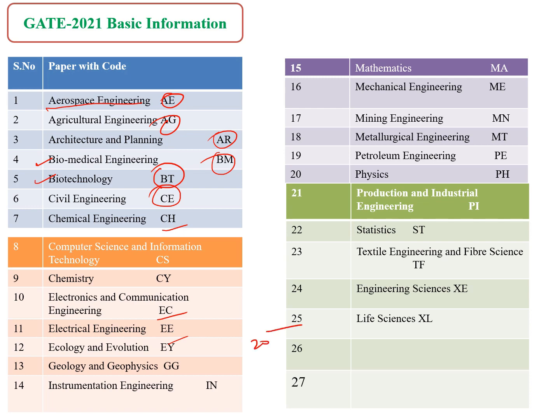In 2021, they have added two more papers, that is 26th and 27th paper. The first one is Environmental Science and Engineering. So now students can write in Environmental Science and Engineering. The next one is Humanities and Social Science. These are the two subjects which have been added in 2021.